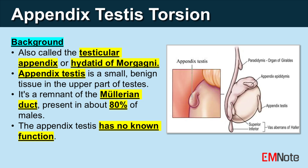It is a remnant of the Müllerian duct, which develops into the female reproductive tract in individuals designated female at birth. Present in about 80% of individuals designated male at birth, the appendix testis has no known function.